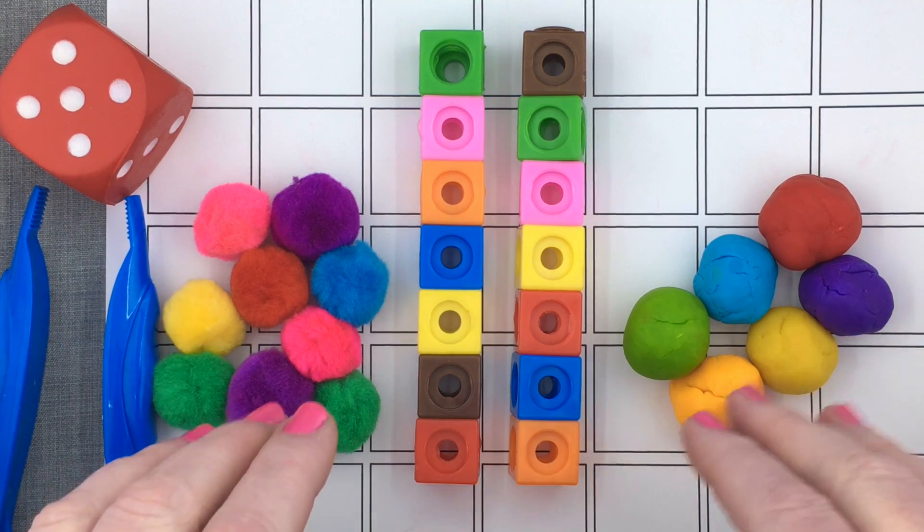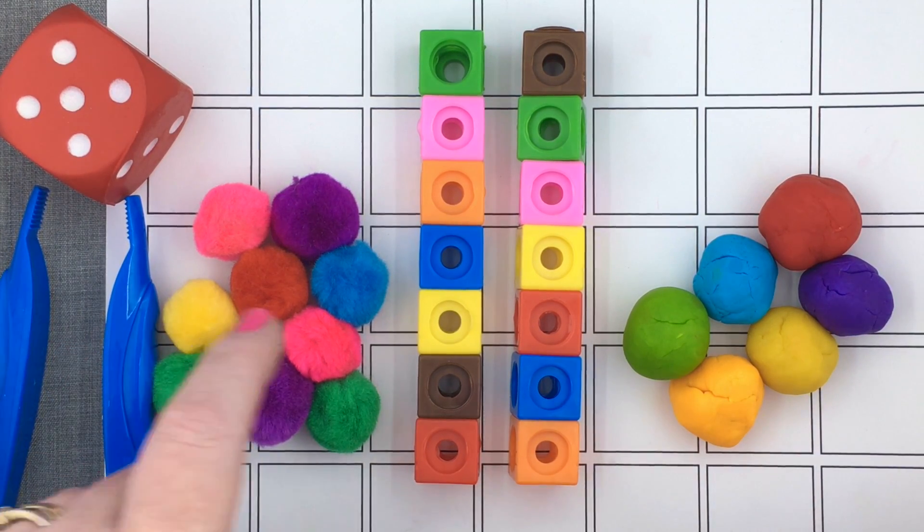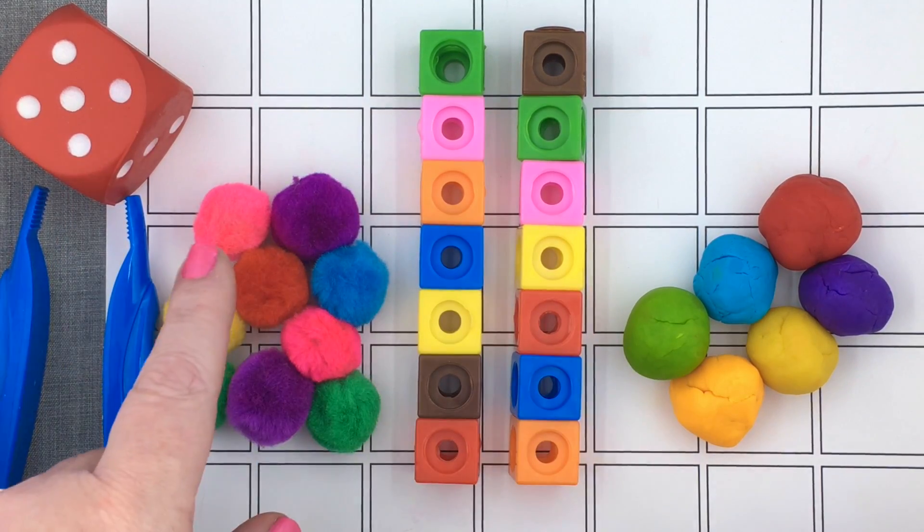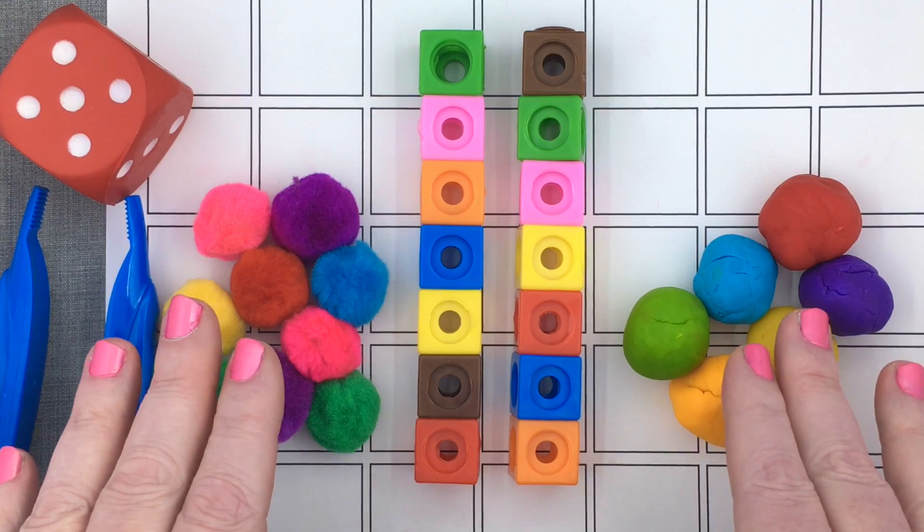For an extra challenge, you can also do a roll and remove activity. They roll the dice and whatever number is showing, they remove that many from the mat until the whole mat is empty.